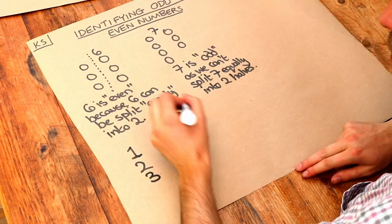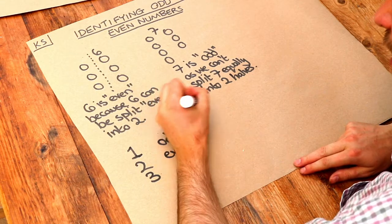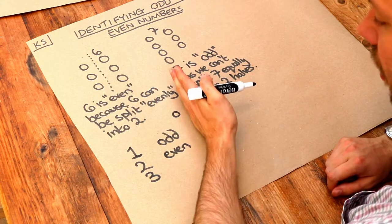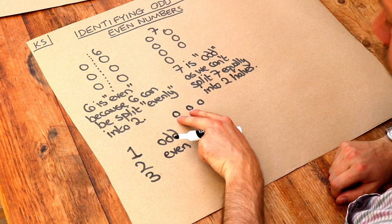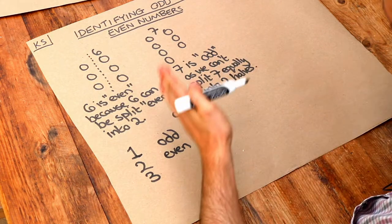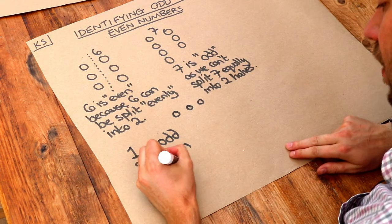What about three? Well if I had three friends, let me just draw that. Can I split that into two equal halves? No I can't. You could have like two on one team, one on the other team. But you can't have teams of equal size. So that is odd.